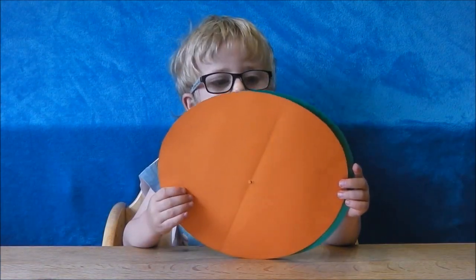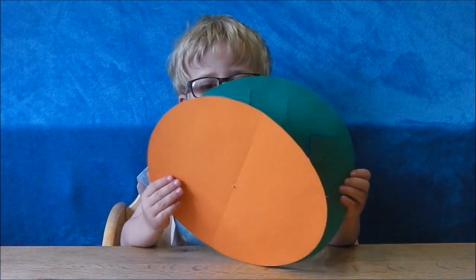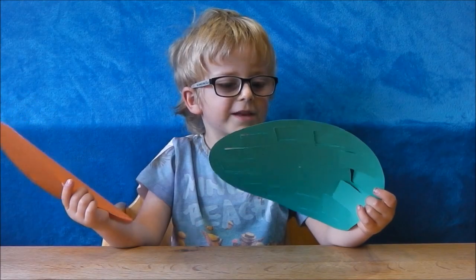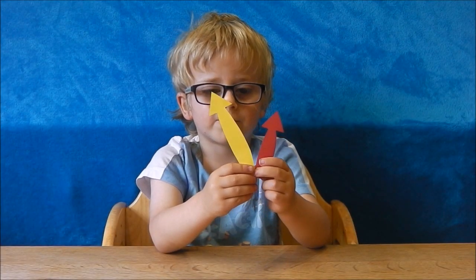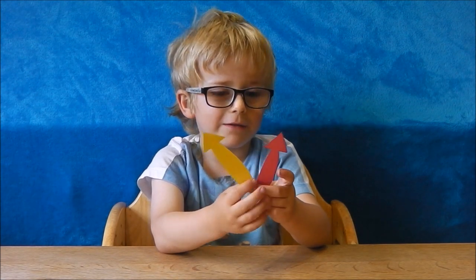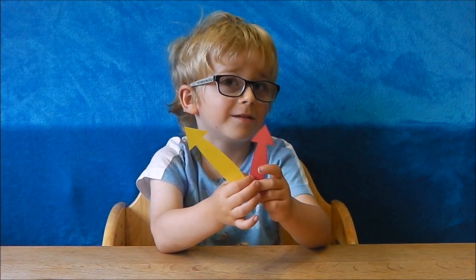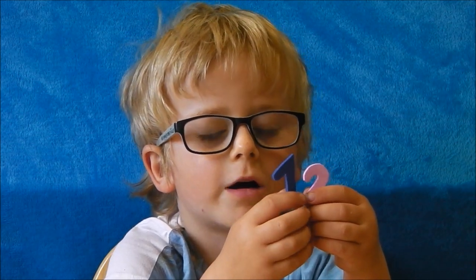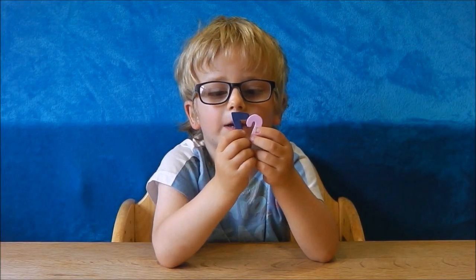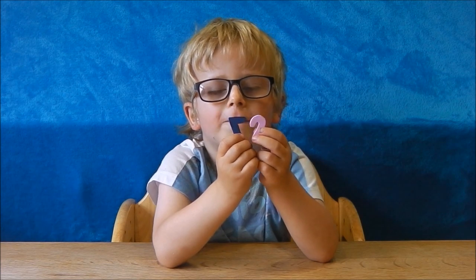To make a clock, you will need two circles of card that are the same size. Best to use different colors. Two arrows, one long one and one short one. We cut ours out of different colored cards again. We need the numbers up to 12. Actually, we made our numbers out of foam.